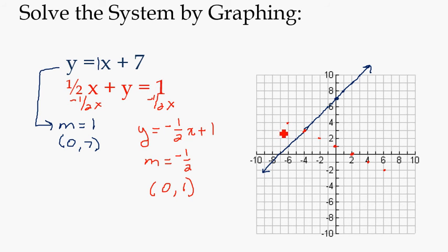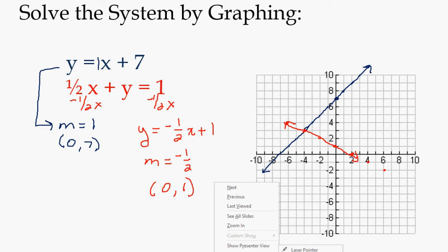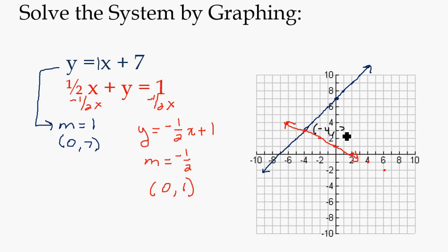It looks like they're going to cross right there. Up 1, left 2. And draw my line. I'll stop there. It's pretty straight. So it looks like they cross at the point negative 4, positive 3. Negative, is that negative 4, positive 3? Yep. And so it's always good to check.